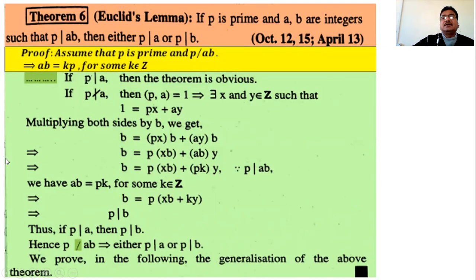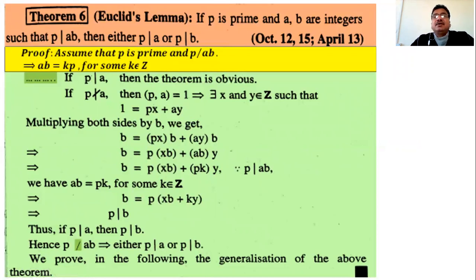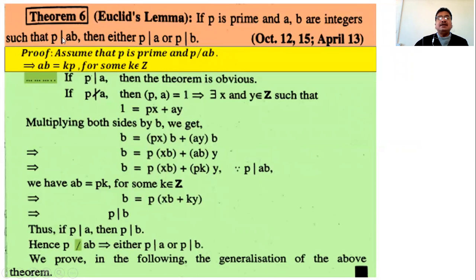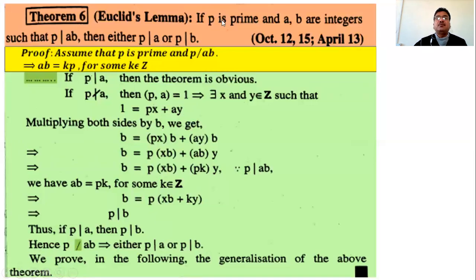The next topic is Euclid's lemma, which is very important for exams. The theorem states: if p is prime — meaning p is divisible only by 1 or itself — and a, b are integers such that p divides ab, then either p divides a or p divides b. This is Euclid's lemma and we will see the proof in the next lecture.